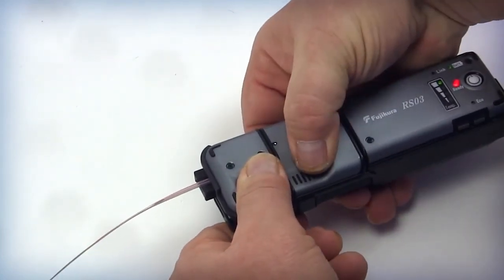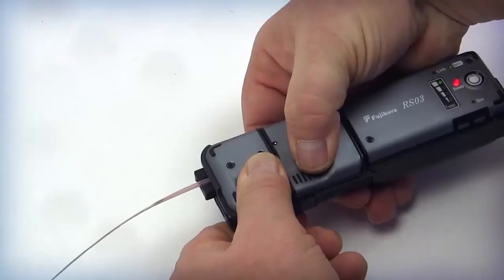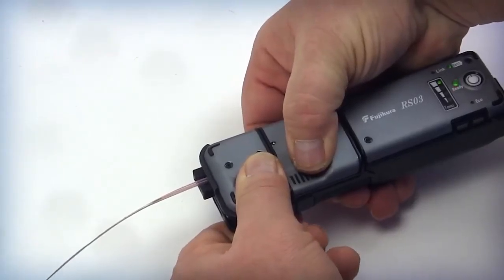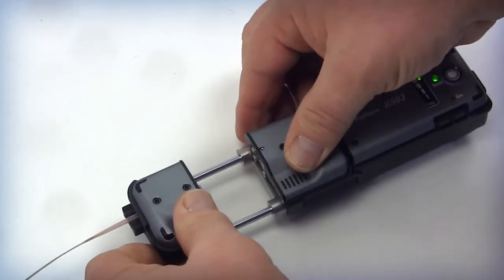Once the cover is closed, firm pressure needs to be applied at the thumb locations on each side of the blades. Firm pressure needs to continue through the entire stripping process. After the heater light turns from red to green, open the slide in a steady firm motion while maintaining pressure on each thumb location. Continue to slide the thermal stripper to the open position.